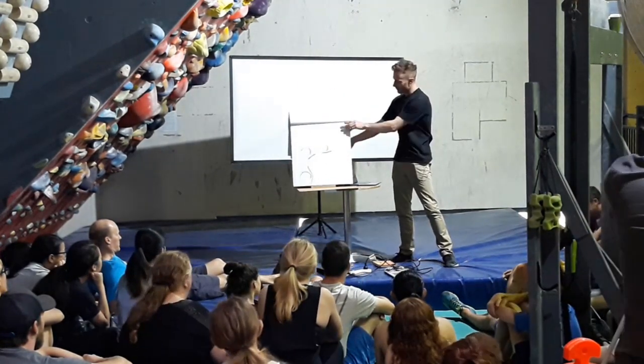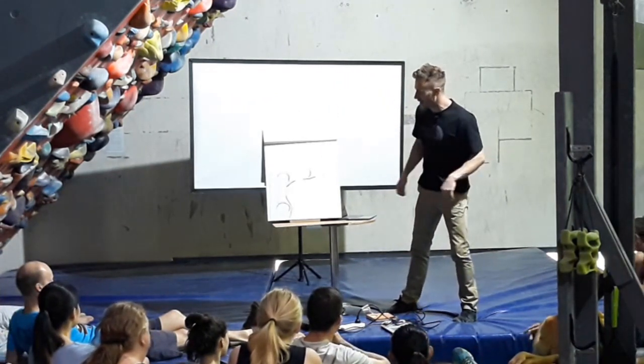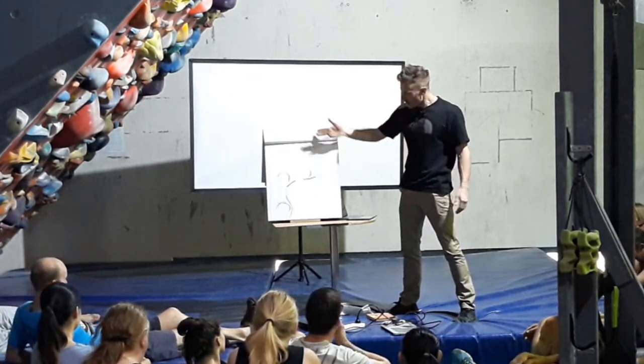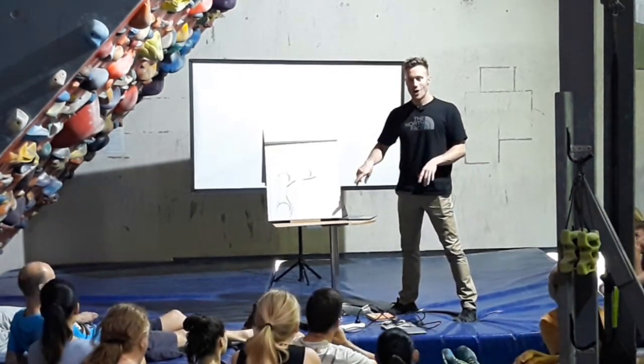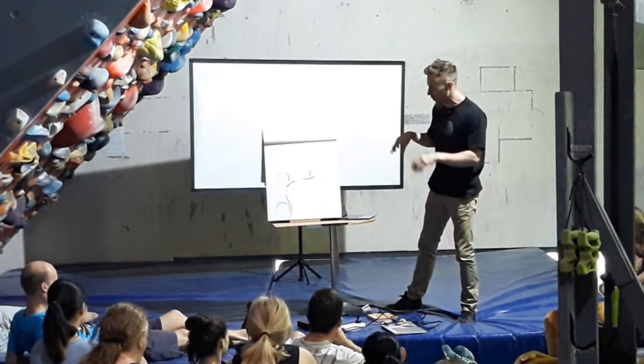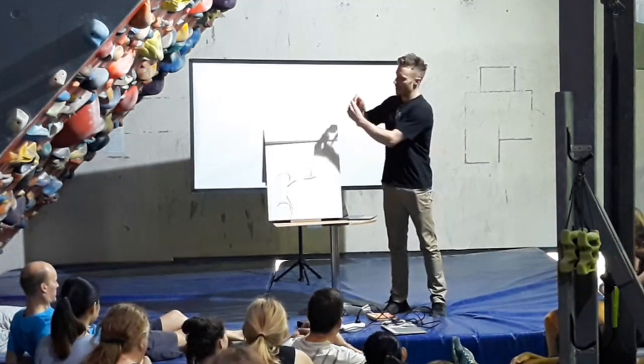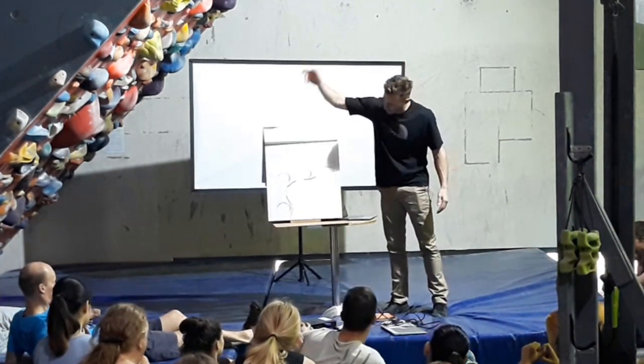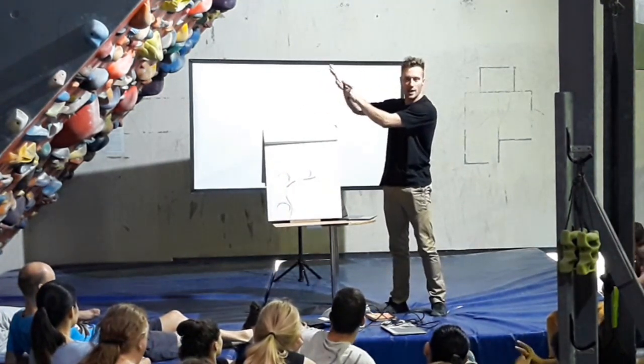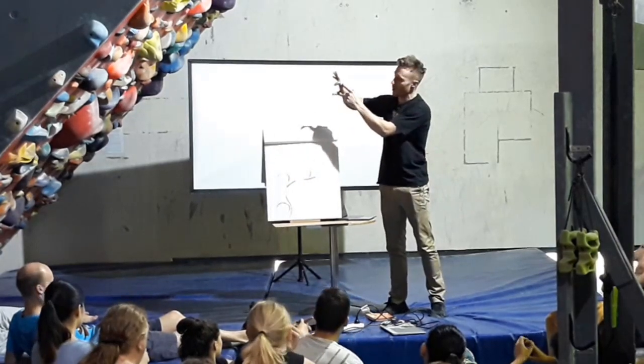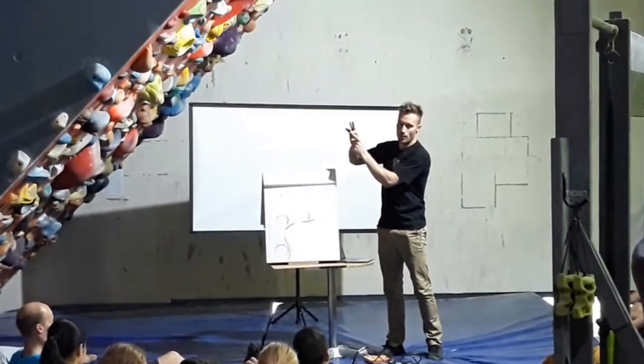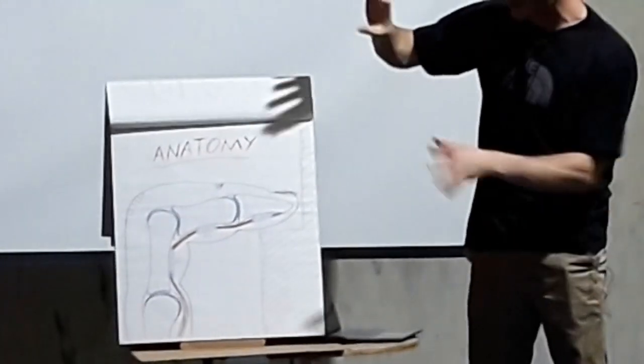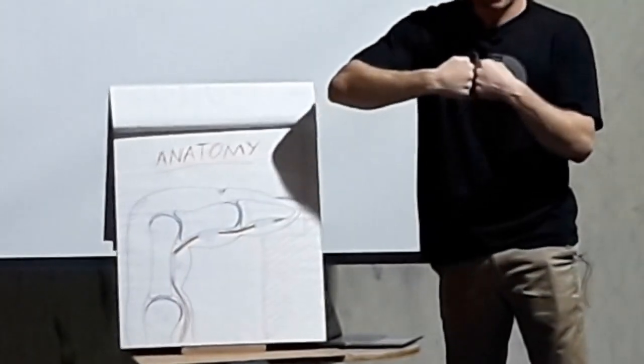So moving on, we have anatomy. This is as scientific as I want to get. This is a finger on an edge. Can everyone see that? This is a finger, a single finger in a half crimp position. The things that I want you to focus on: this bone is the last bone in the hand. That bone is the first bone in the finger, that one the second, and that one the tip. The joints here that's bent at 90 degrees is that one. Hence we can see the relevance to a half crimp position.